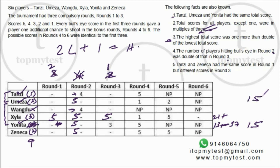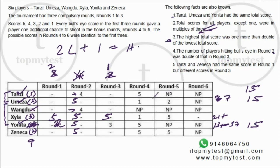So Tanzi, Umeza, and Yonita all scored 15. Yonita's round-one score must therefore be 2 (to reach total of 15: 2 + 5 + 5 + 3 = 15, or similar). Umeza's existing known score is 5+2+1 = 8, needing 7 more across two rounds — requiring a bullseye, so his scores are 5 and 2 in those rounds. Tanzi already has 9, needs 6 more across two rounds — scores of 5 and 1.